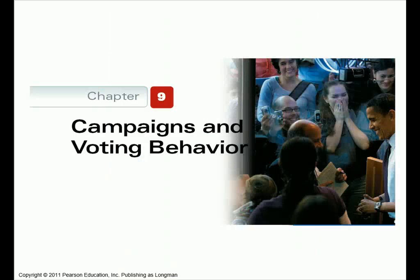The chapter is going to discuss campaigns and voting behavior. The objective is that we understand exactly how someone runs for elected office at the federal level, particularly the President of the United States. We need to understand a little bit about how the primary and caucus process works for the selection of nominees. We're going to look at the entire system from beginning to end in terms of how a nominee is selected and what the process is.